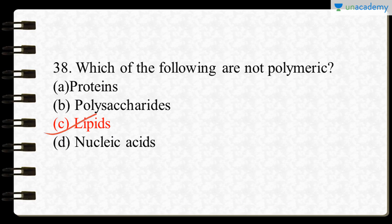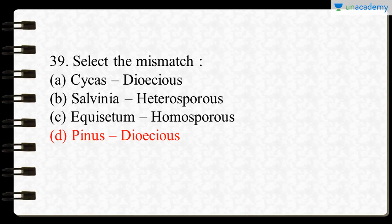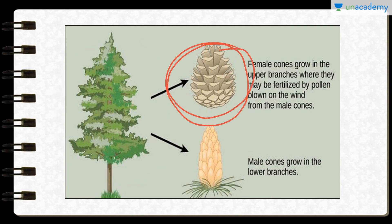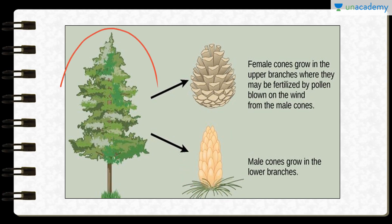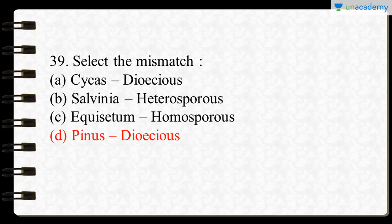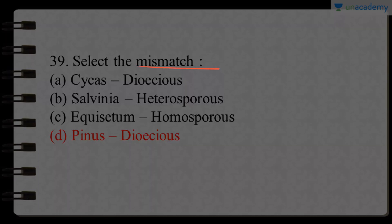The next question asks to select the mismatch. In option D, Pinus is described incorrectly as dioecious. In fact, Pinus is a monoecious plant, having both male and female cones on the same plant. Female cones grow on upper branches and male cones on lower branches, but both are present on the same plant. Therefore option D is the correct mismatch.